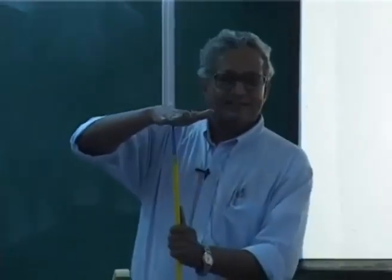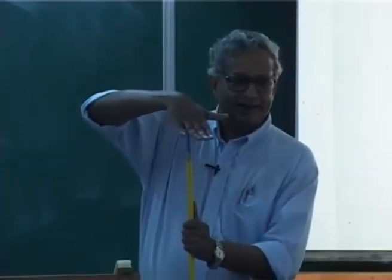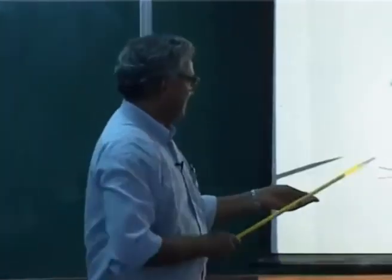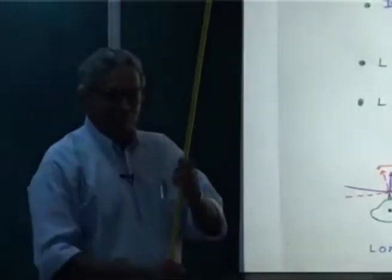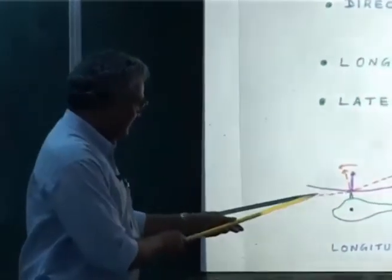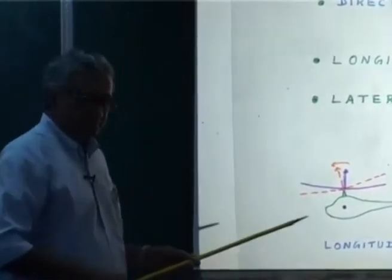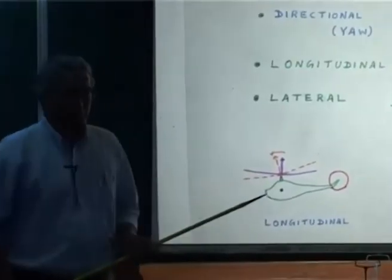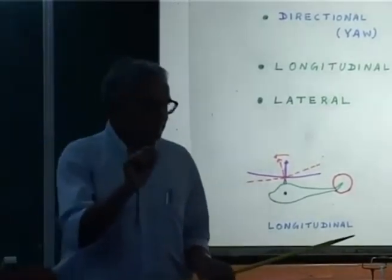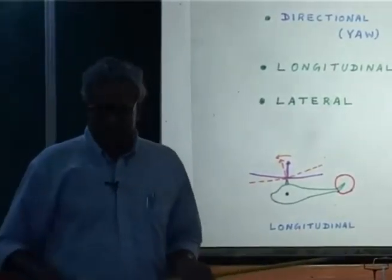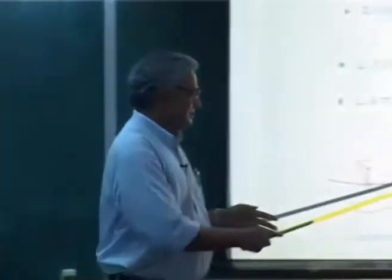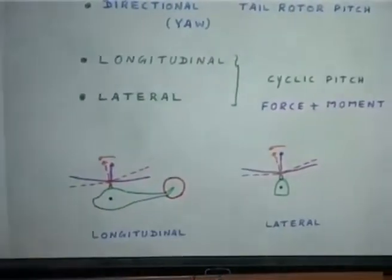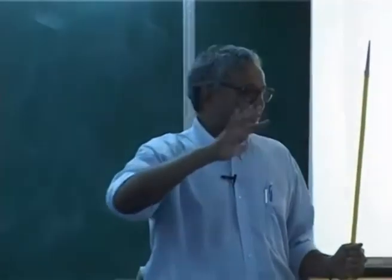Initially the disc is like this, then it tilts. As a result, it develops a forward component of the rotor lift force, and that will move the helicopter forward. But that will also give a moment about the C.G., therefore it will pitch. So these two you cannot decouple. Similarly, he can do lateral — that means tilting it this way — which implies he can fly in any 360 degrees.